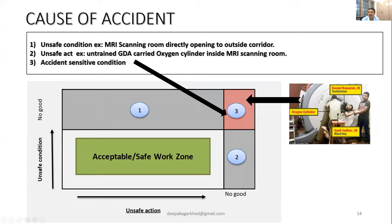A real case study: a patient was entrapped with a technician in an MRI room when an oxygen cylinder was pulled by the magnet. The technician, who was holding the cylinder, was also pulled in. The unsafe condition was the open door allowing anyone to enter; the unsafe act was the ward boy not knowing that metallic objects cannot be taken into the MRI gantry room. The result was a fatal injury.